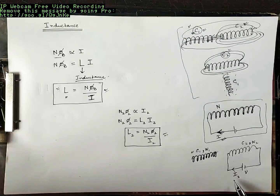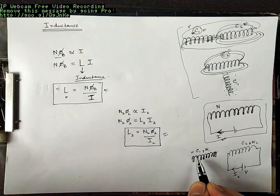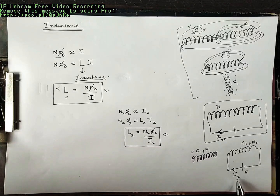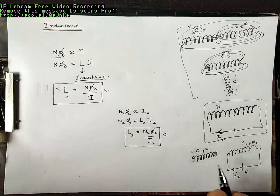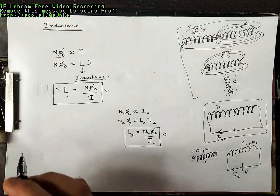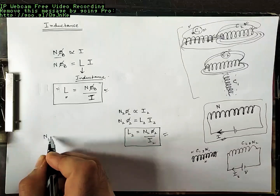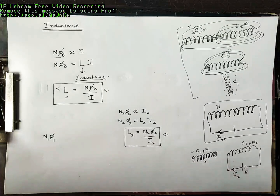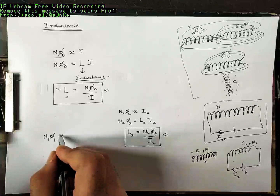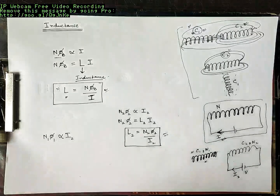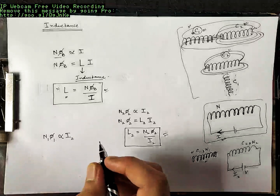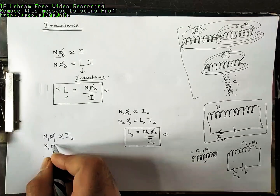So the flux linking coil C1 is dependent upon current I2. If I2 is more, the magnetic field produced by the solenoid C2 is more, so the flux linked to coil C1 is more. We can write N1·φ1, where φ1 is the flux through each turn of C1 and N1 is the number of turns. So N1·φ1 is directly proportional to current I2.